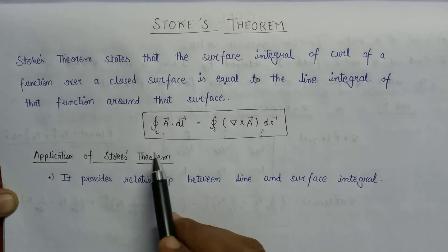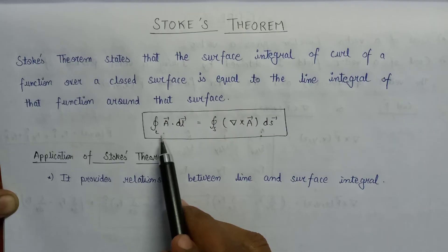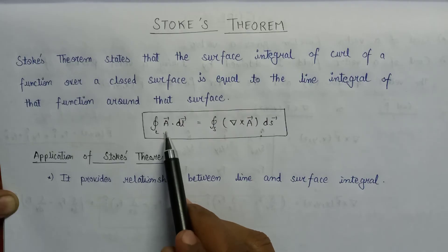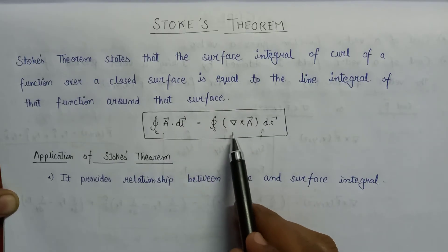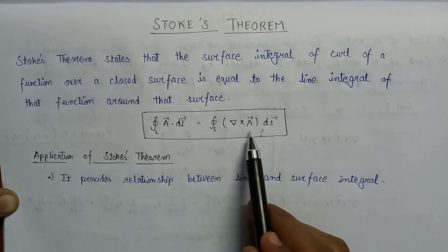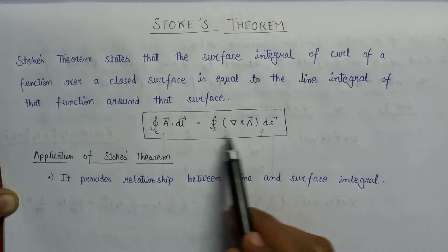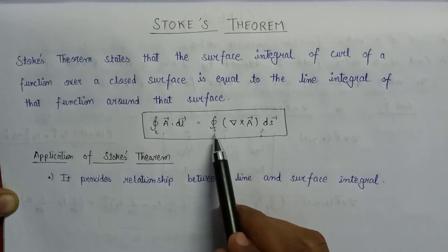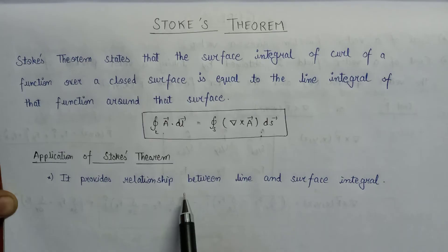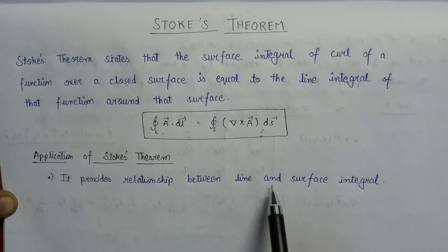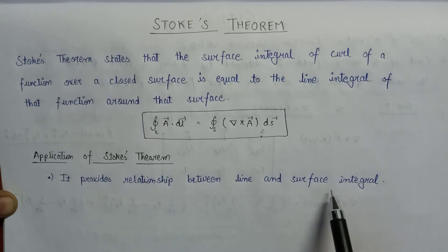The line integral of the vector function A is being converted into the curl of a vector function over a closed surface. That is why we say it provides a relationship between the line integral and surface integral.